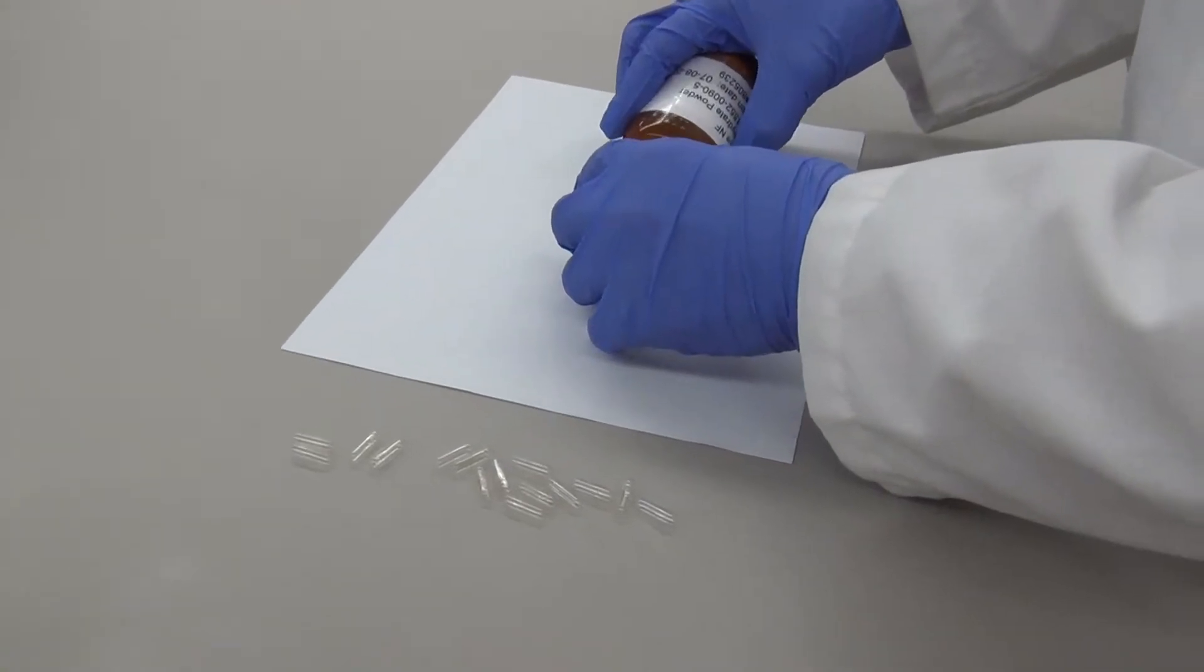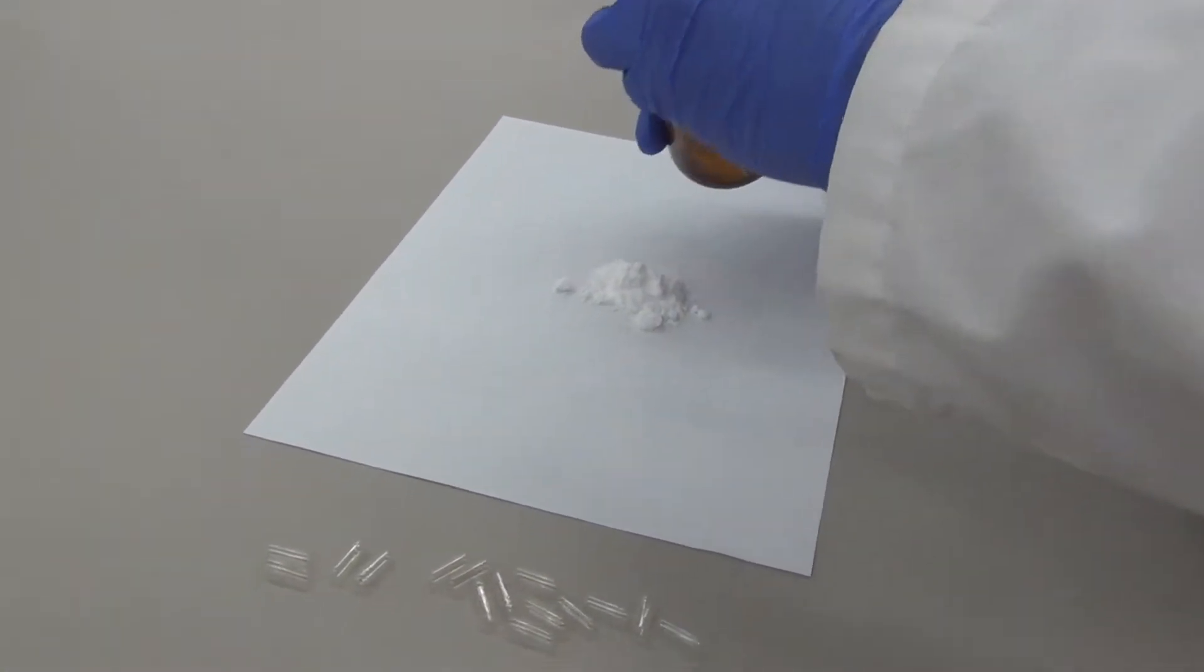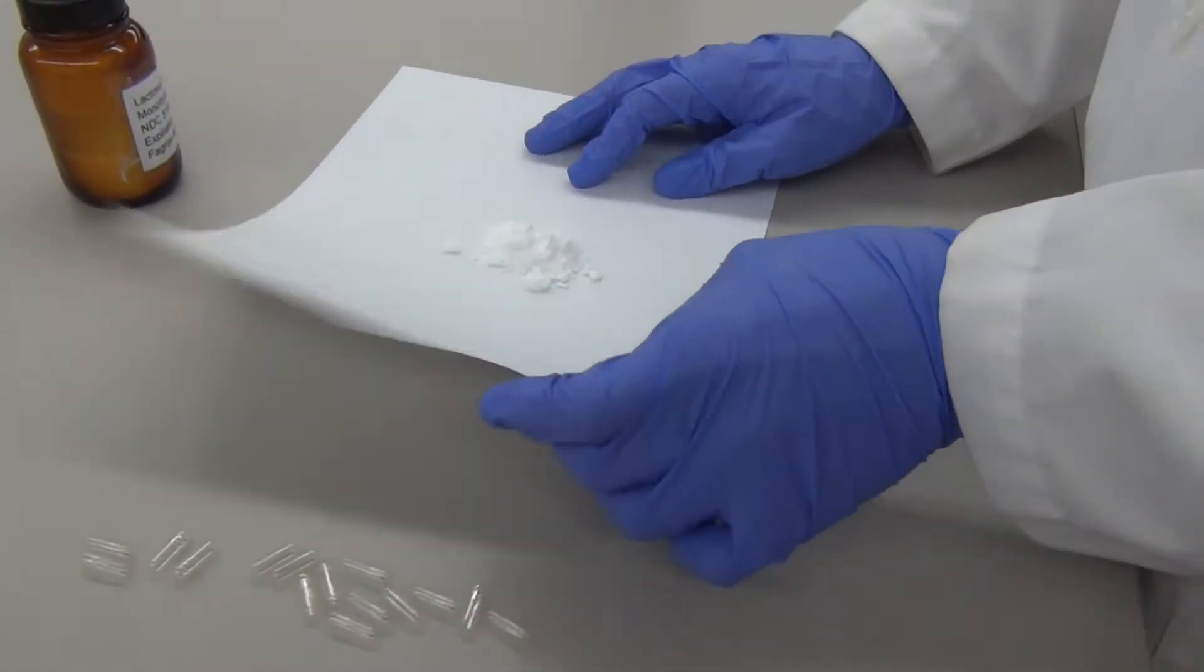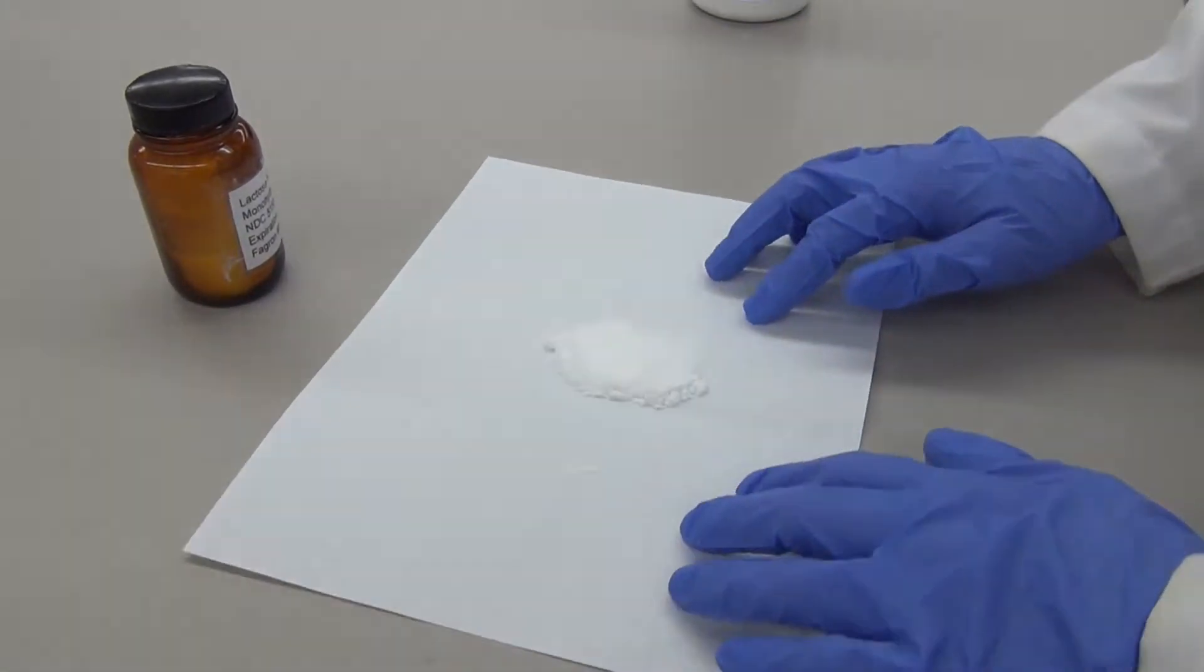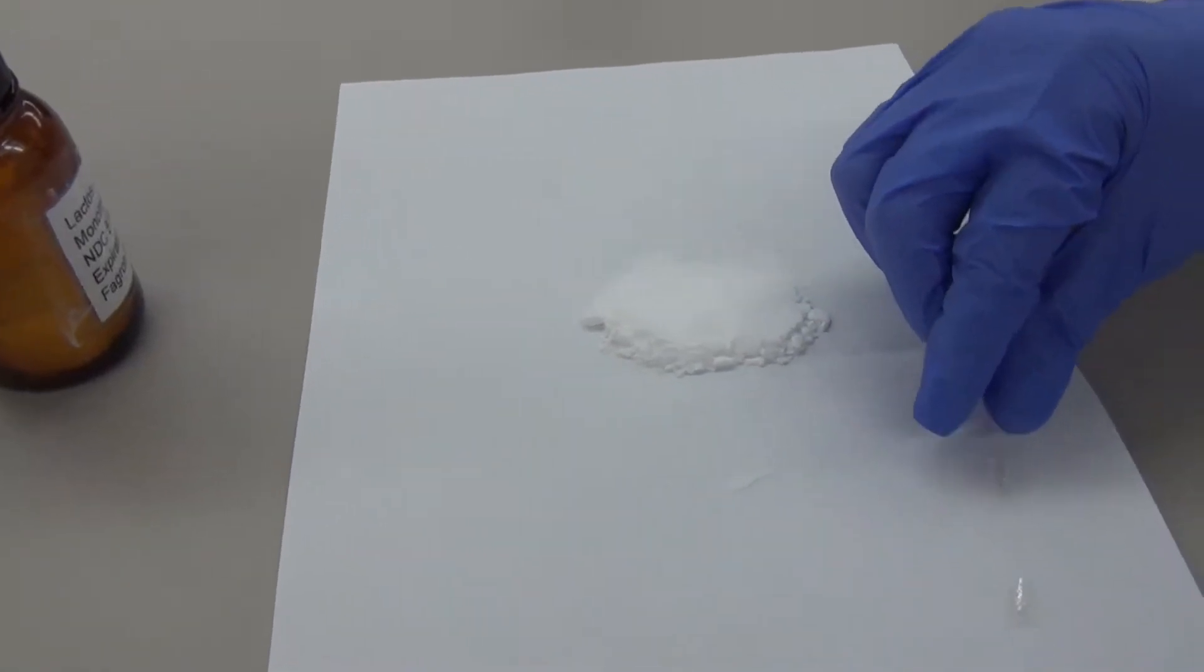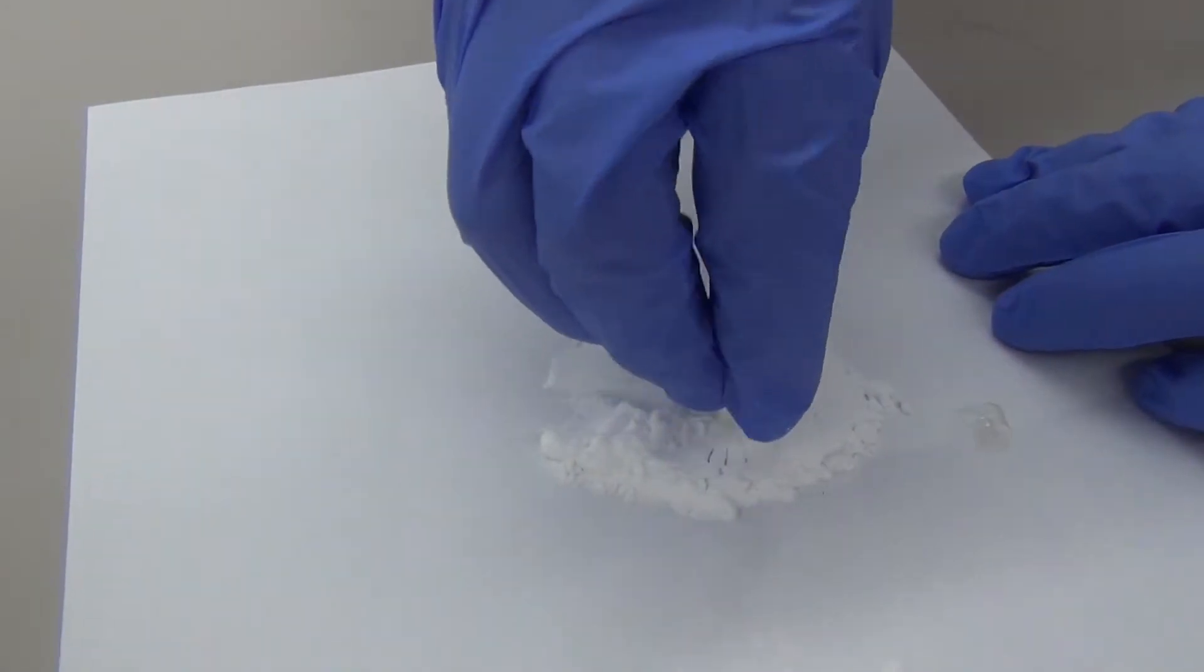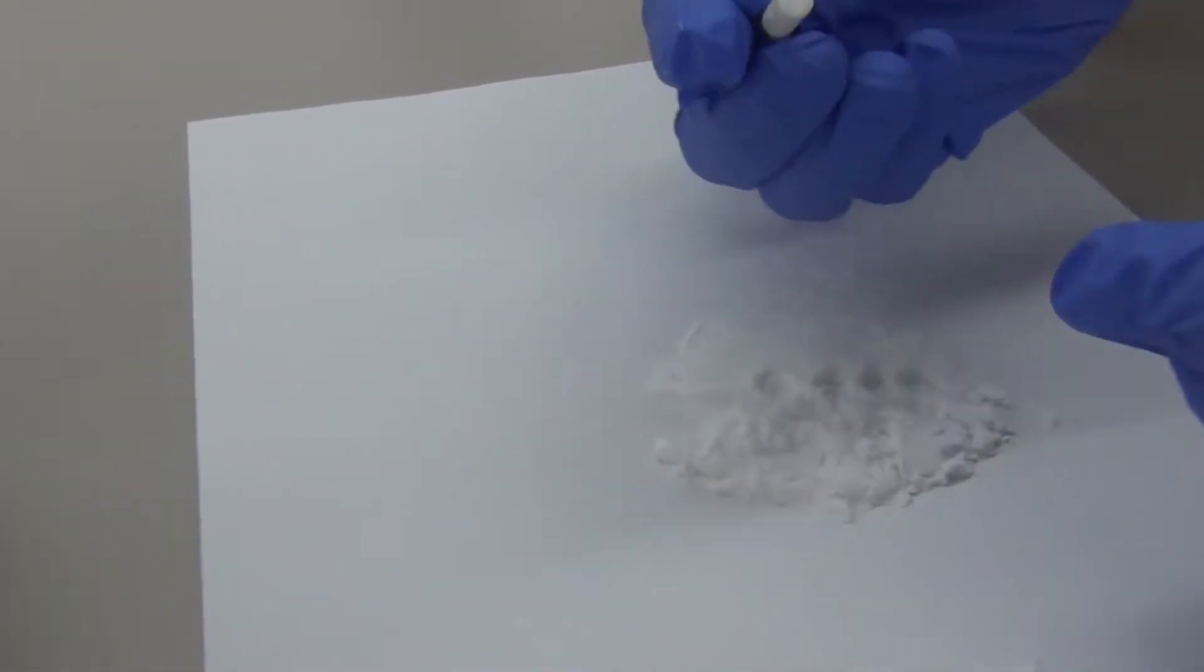Pour some of the lactose powder onto a blank sheet of paper. Fold the paper over the lactose to flatten it out. Now take an empty capsule and pack it tightly with the lactose. Try and mimic the technique shown in this video when filling the capsules.